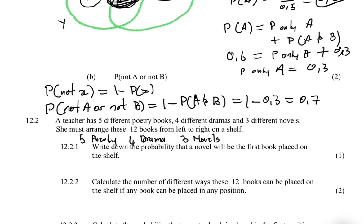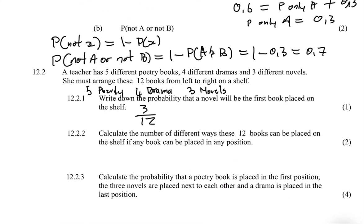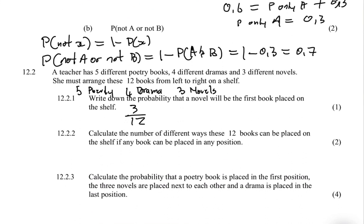Question 12.2.1 asks: write down the probability that a novel will be the first book placed on the shelf. She has 12 books, puts a blindfold on — what's the probability she picks a novel? She has 12 options, and of those 12, three are novels, so the probability of picking a novel is 3 divided by 12.